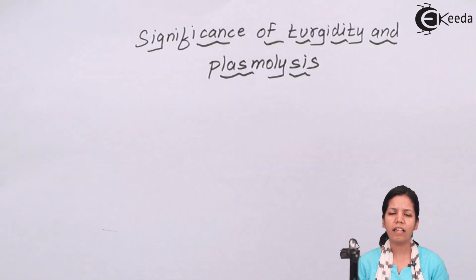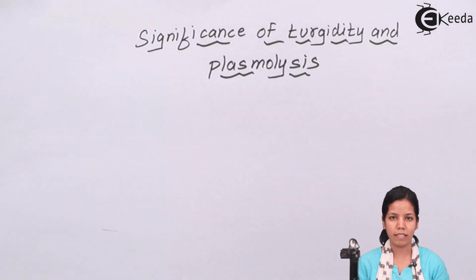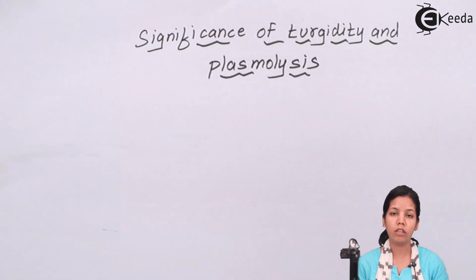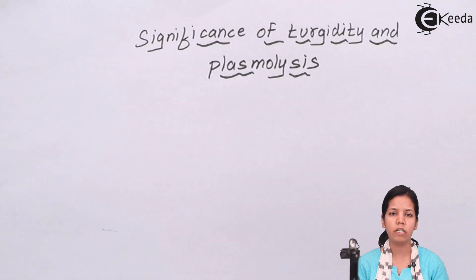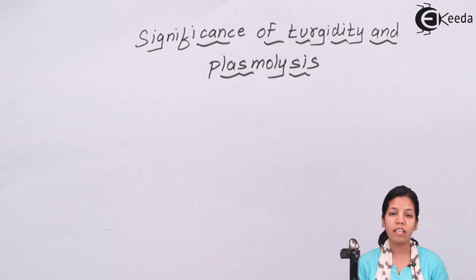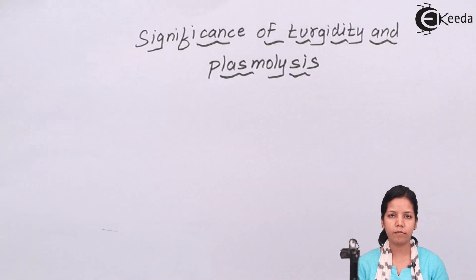Stomata are nothing but tiny pores which are present on the surface of the leaf. When the sun's heat in the form of photons falls on the leaf, stomata open and transpiration takes place. Turgor pressure helps in the opening and closing of stomata.